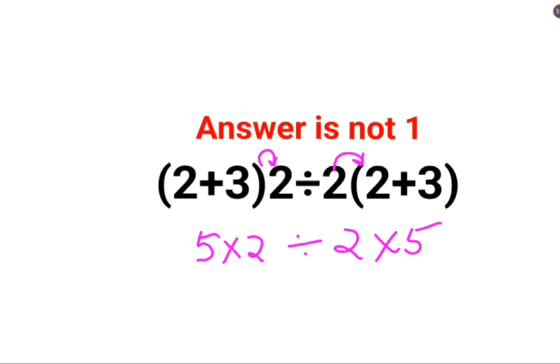After this step, what people do is let's do it this way: 10 divided by 10, this is so easy, so answer is 1. This is where a lot of people go wrong.